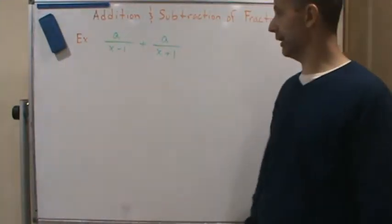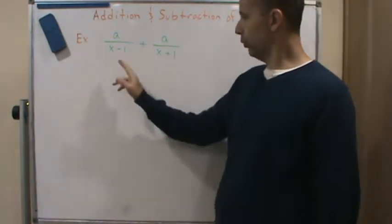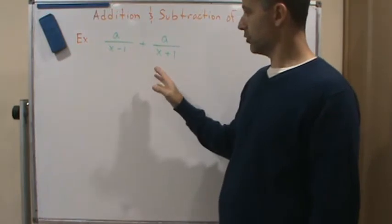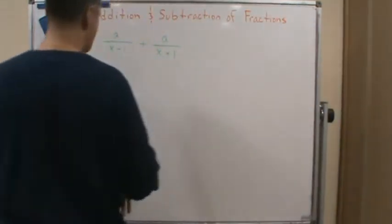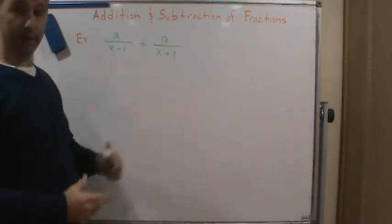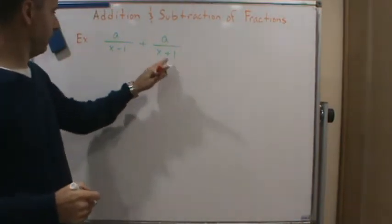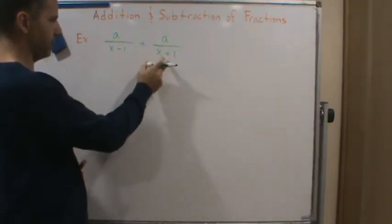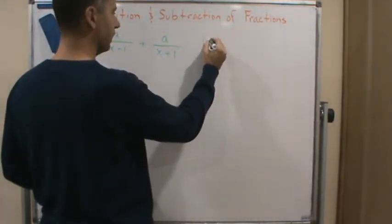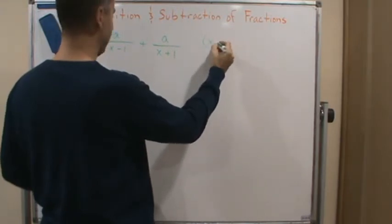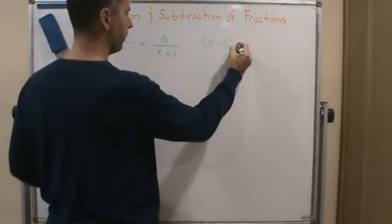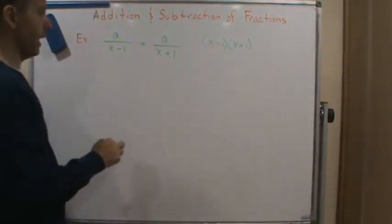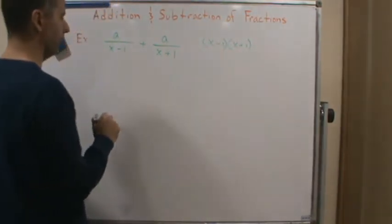So now how do we handle this one? We look at these and see if we can factor them, but these are already factored. So the least common denominator is going to be both of these, right? Because this is the only factor we have here, this is the only factor. So the lowest common denominator is going to be that.